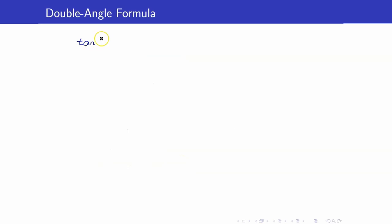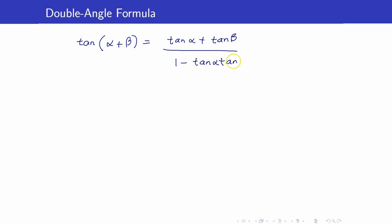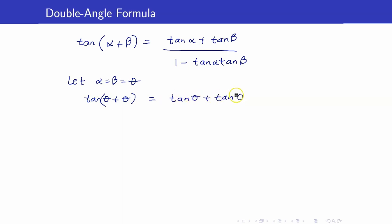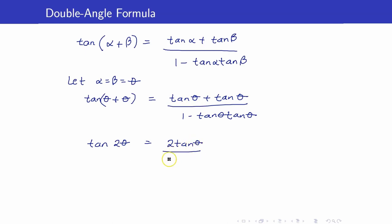We are now ready to get the double angle formula for tangent. We first recall the formula for tangent of alpha plus beta. If we let alpha and beta to be the same angle theta, this becomes tangent theta plus tangent theta all over 1 minus tangent theta times tangent theta. Simplifying, tangent of 2 theta equals 2 tangent theta all over 1 minus tangent squared theta.